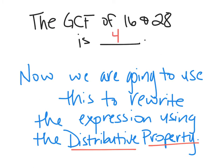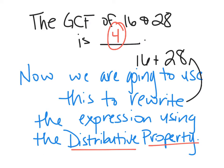The GCF of 16 and 28 is 4. Now we are going to use this number to rewrite the expression using the distributive property. Our expression was the number sentence 16 plus 28. So we're now going to use 4 to rewrite 16 plus 28 using the distributive property.